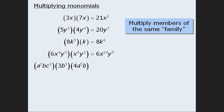Finally, in the last example, the product of the coefficients is 12. The product of a squared and a to the power of 5 is a to the power of 7. The product of b, b cubed, and b is b to the power of 5. And finally, the product of c cubed times no other c's is equal to c cubed.